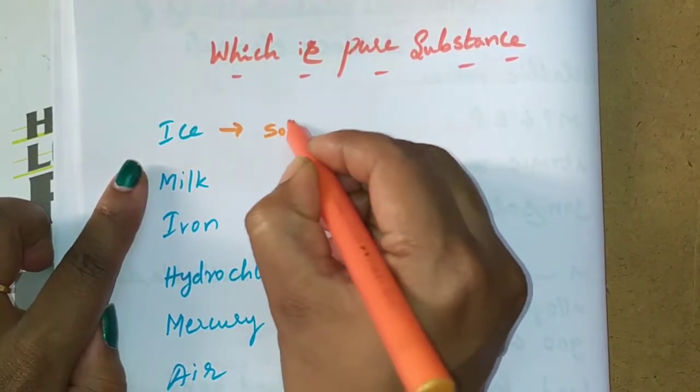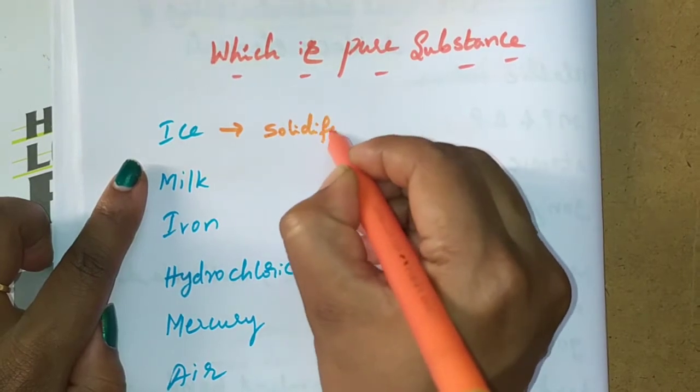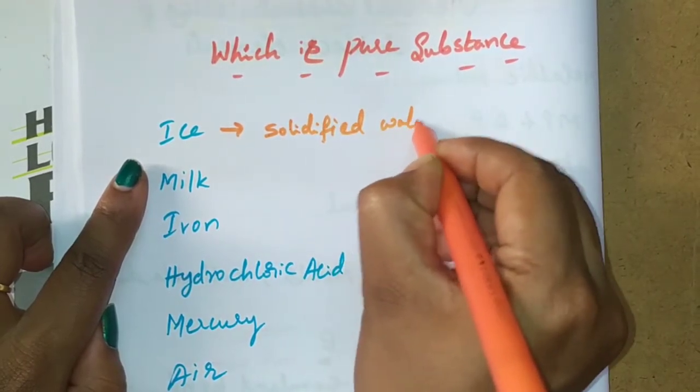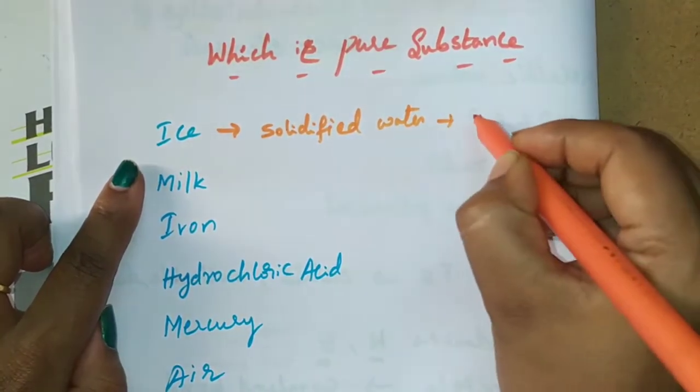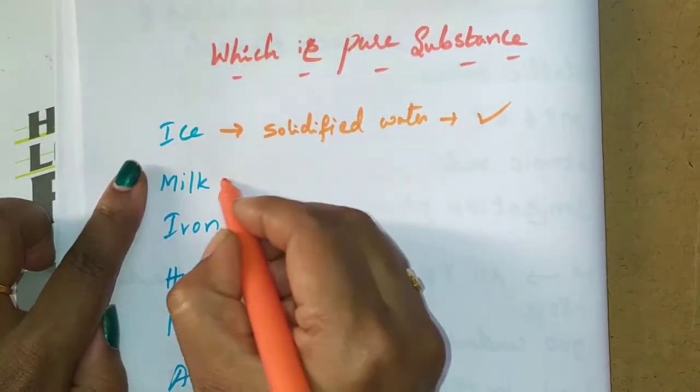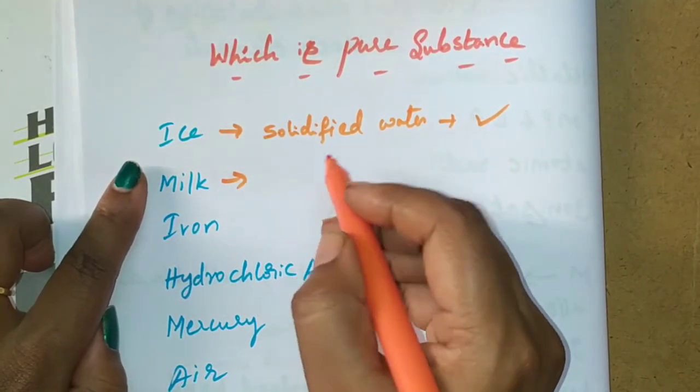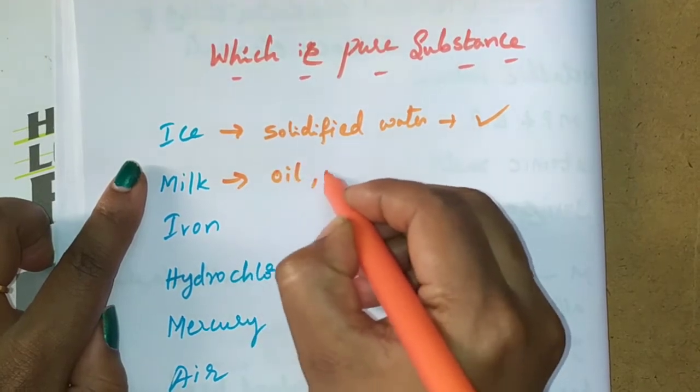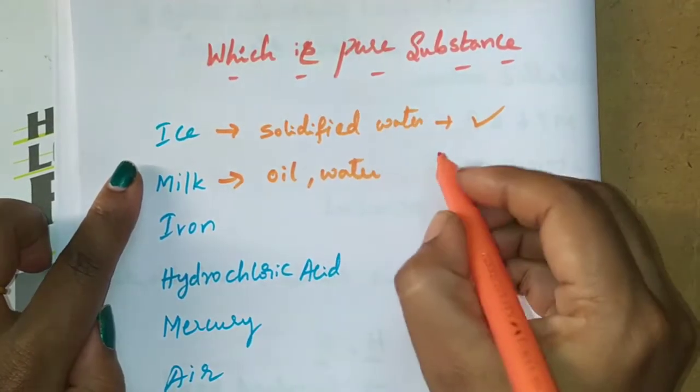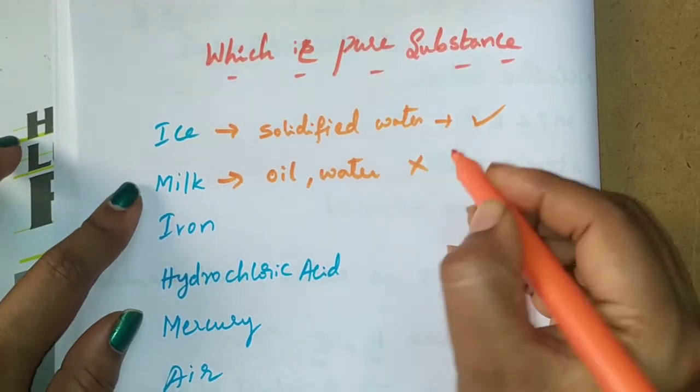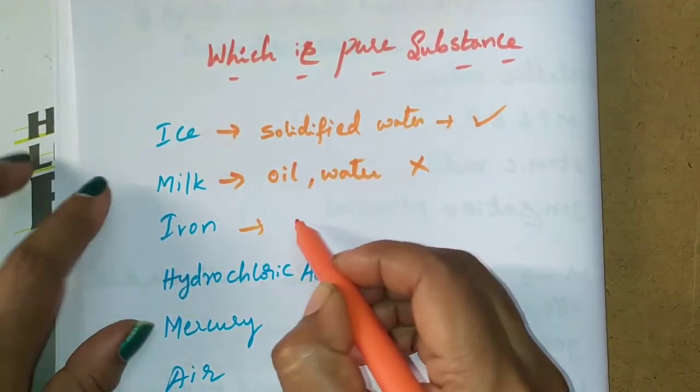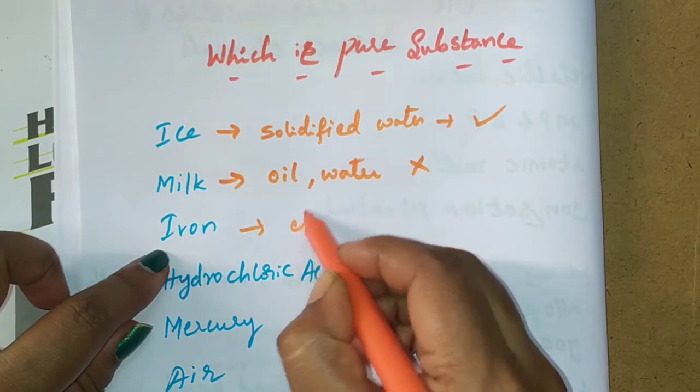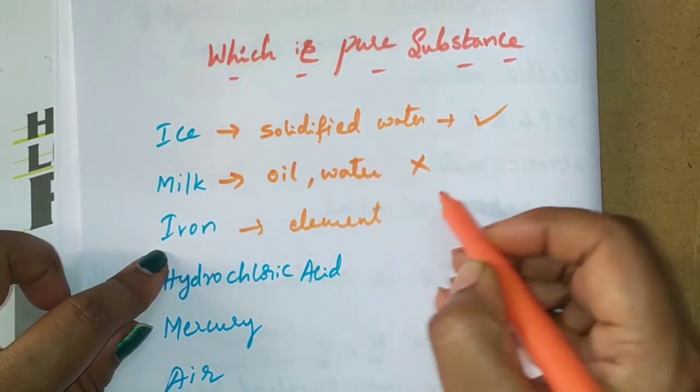That means solidified water, so it is a pure substance. Milk - milk having a mixture of oil and water, so it is not a pure substance. Iron - it is an element form, that's why